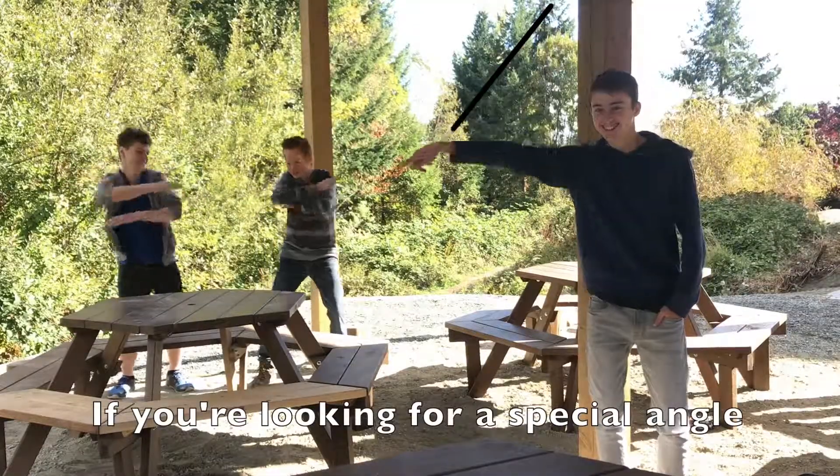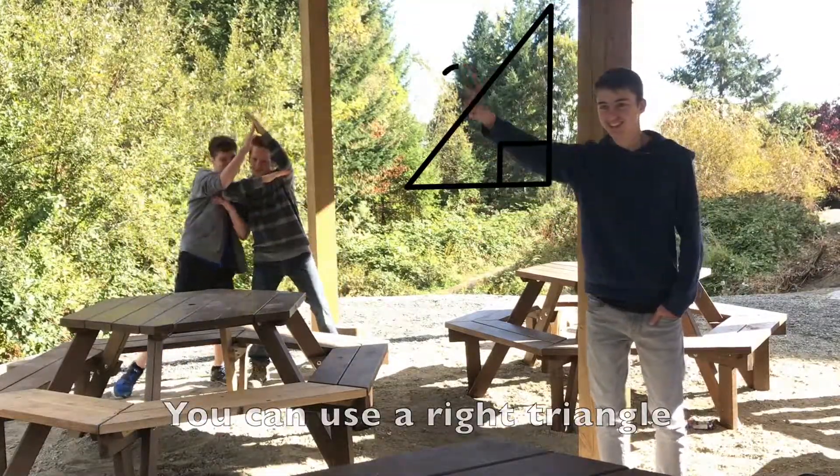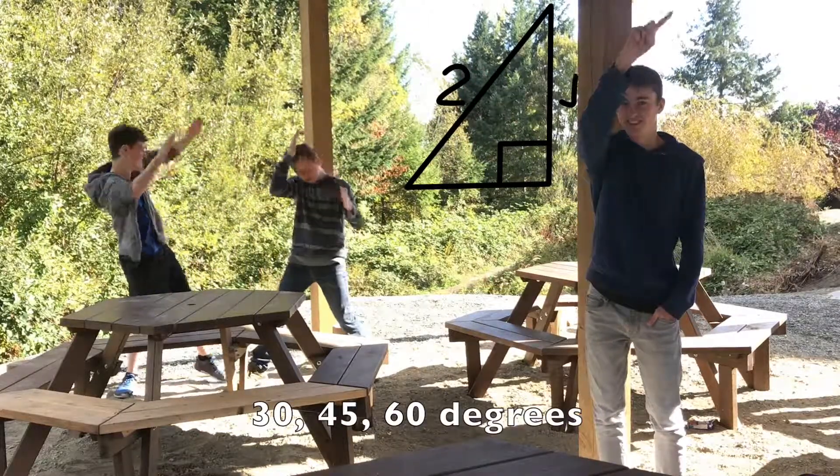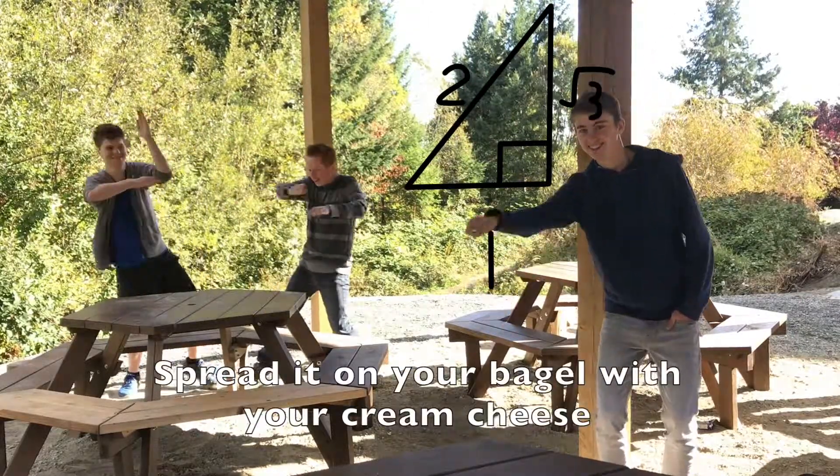If you're looking for a special angle you can use the right triangle: 30, 45, 60 degrees. Spread it on your bagel with your cream cheese.